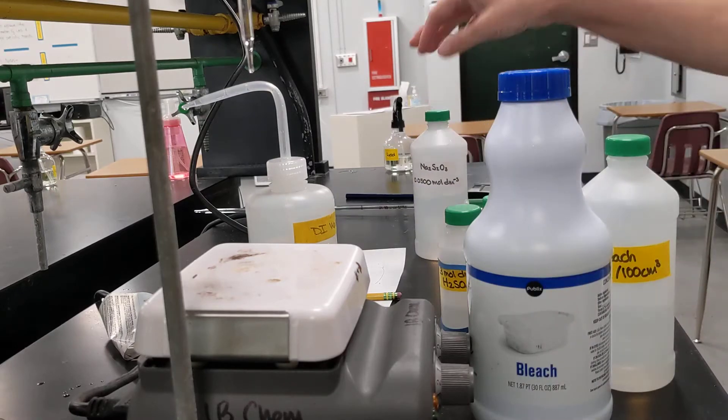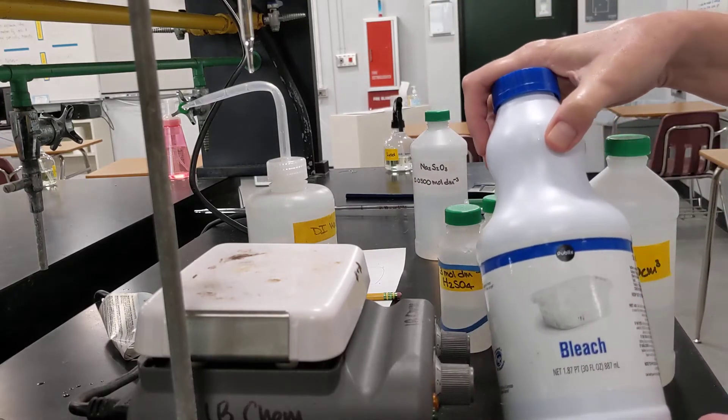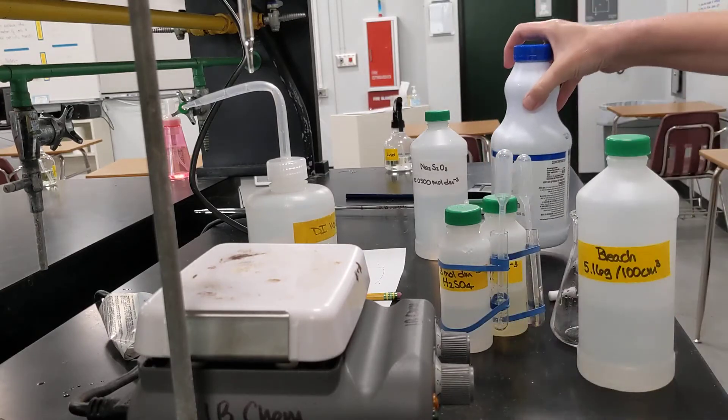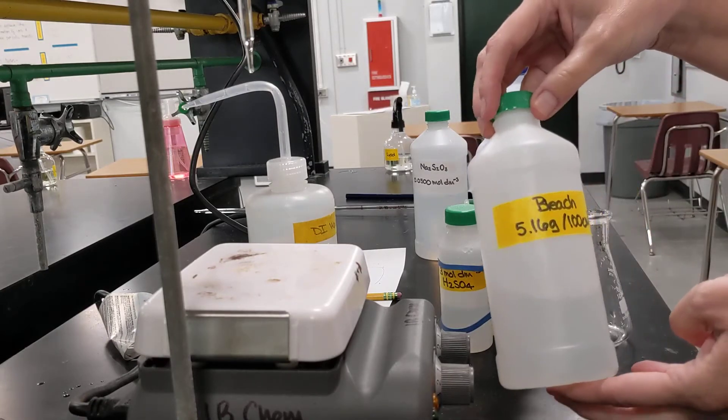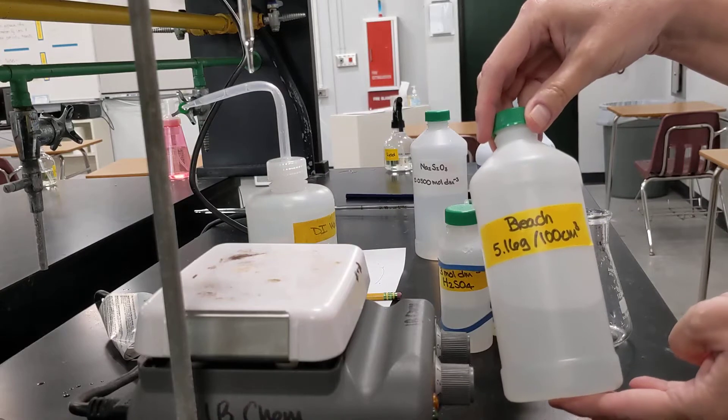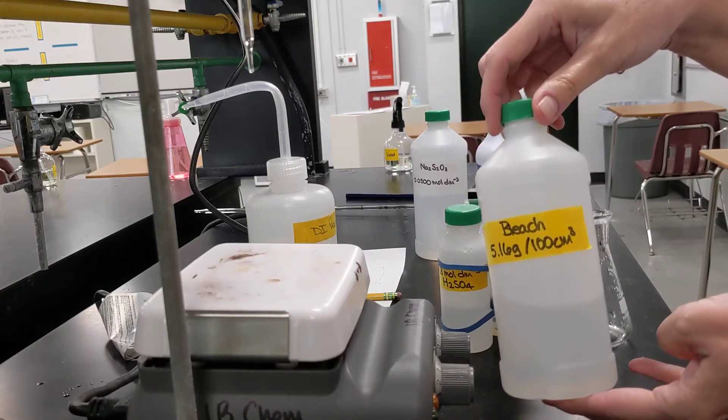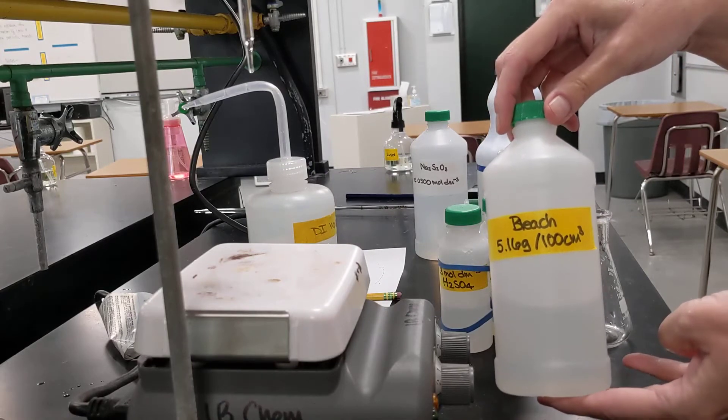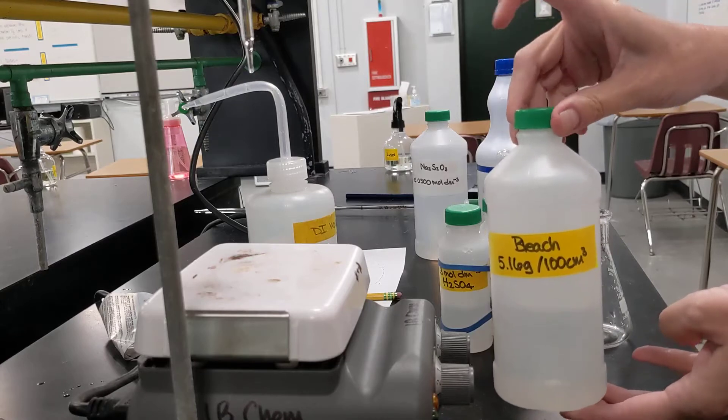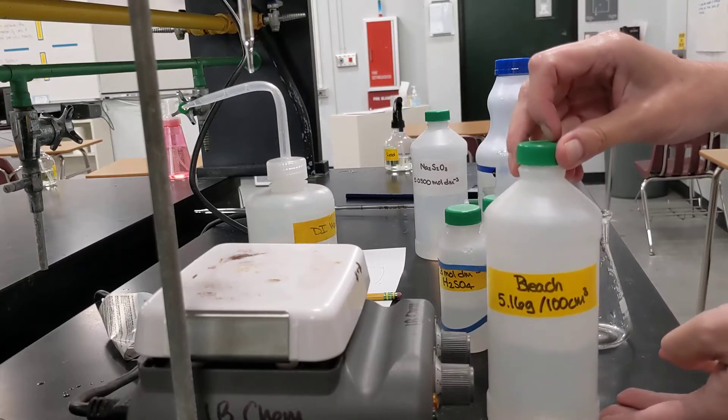And the other thing I did is I took our bleach, a little bit of it, and I diluted it. So I diluted 1.56 grams of bleach to a total volume of 100 cubic centimeters with deionized water. And it's the diluted solution that we are going to titrate.